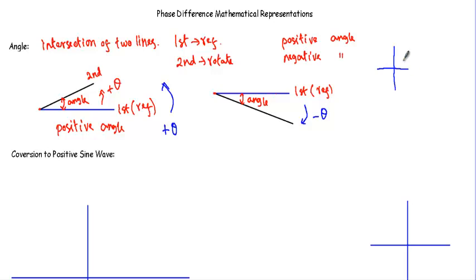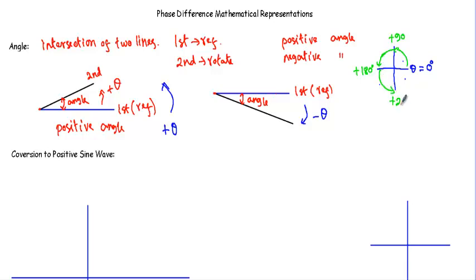In the four-quadrant coordinate system, we consider theta equal to 0 degrees on the reference axis. If we rotate 90 degrees counter-clockwise, the angle is positive 90 degrees. Another 90 degrees gives plus 180 degrees, another gives plus 270 degrees, and one more gives 360 degrees, which overlaps with 0 degrees. Therefore 360 degrees and 0 degrees are used synonymously.